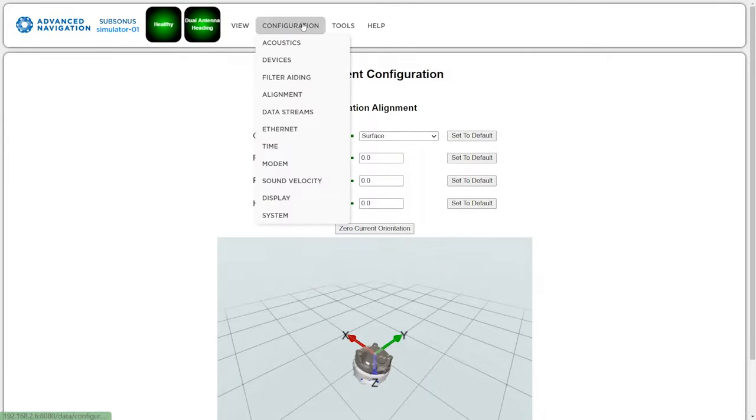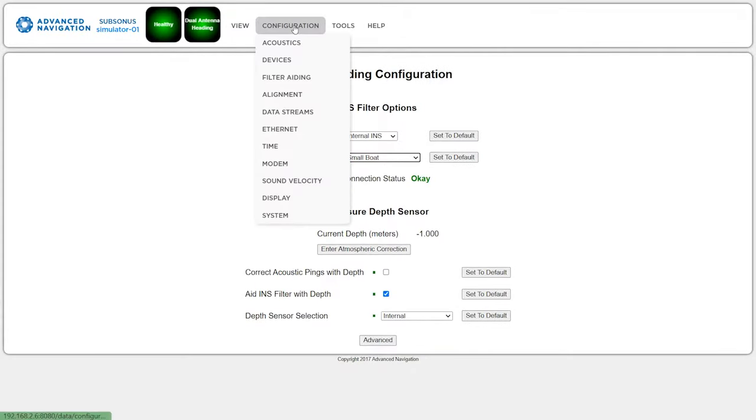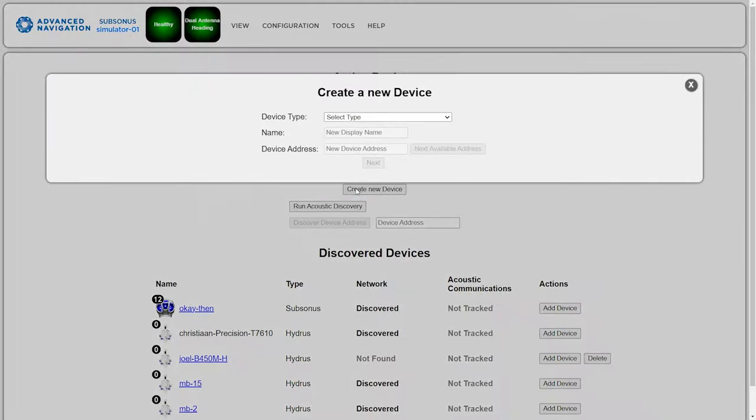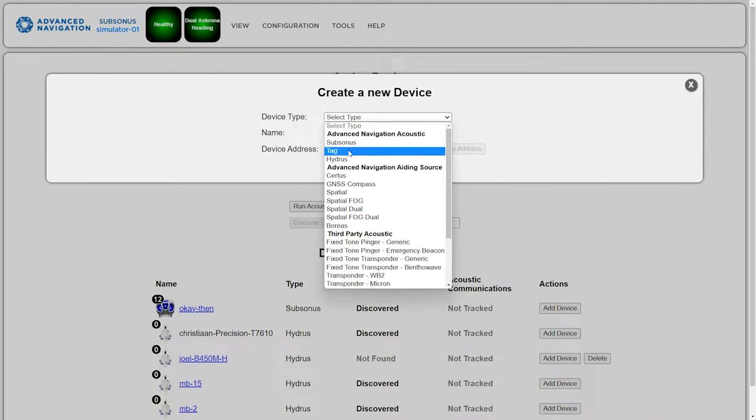Once in the web interface, enter the Subsonus offsets and select the applicable vehicle profile. Click the create new device button to add Subsea Subsonus or Subsonus Tag as tracked devices.